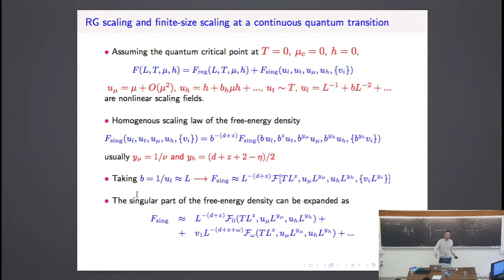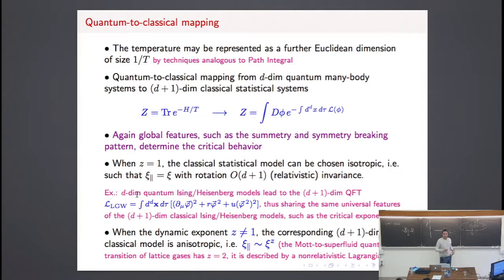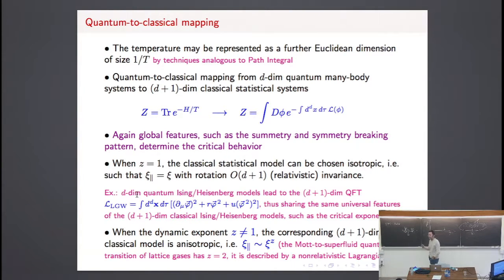This is essentially related to the quantum-to-classical mapping, which I'll consider in more detail in one of the next lectures. Also in this case we can have scaling predictions for the free energy, the two-point function, and all thermodynamic quantities. In a quantum system, the temperature can be represented as a further Euclidean dimension whose size is one over T. There is an equivalence — the quantum-to-classical mapping — which I'll show in detail next lecture. It associates the quantum partition function of the model with a path integral representation, and in this path integral we have not only spatial dimensions but also an imaginary time dimension tau, with size one over T.